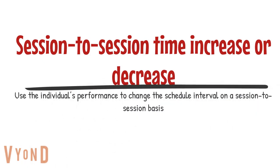In a session-to-session time increase or decrease, the learner's performance is used to change the schedule interval on a session-to-session basis. At the end of a session, establish a new NCR time interval for the next session by dividing the number of problem behaviors that occurred by the duration of the session — essentially finding a new baseline. You can decrease the interval if problem behavior is increasing, then increase the duration again after they've shown success.